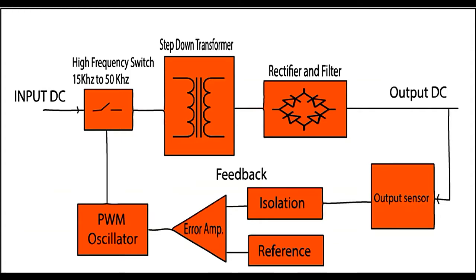The rectified output gives DC. That output DC goes through a sampling process using an output sensor. There is also an isolation reference error amplifier for feedback, and a high-frequency switch operating at 15 kHz to 50 kHz. The switching is performed by a PWM oscillator, forming a closed loop.